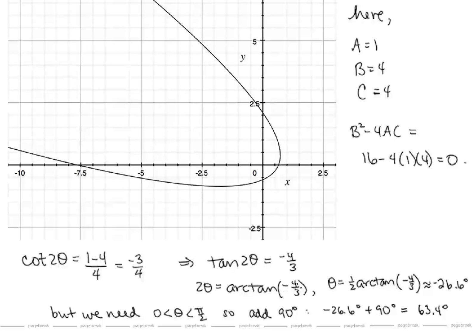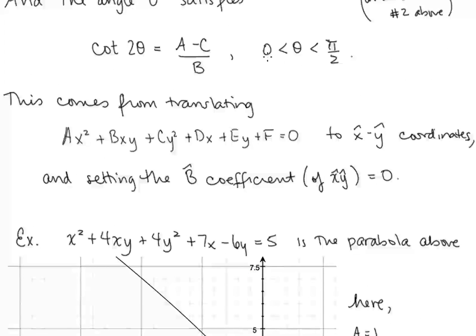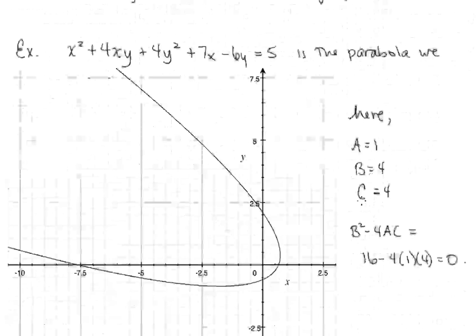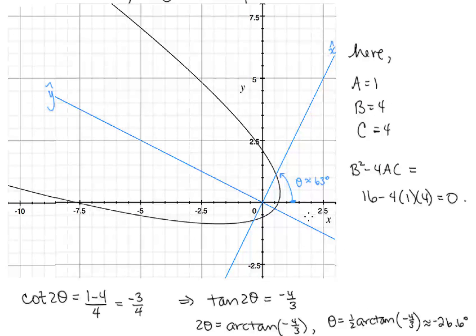So 2θ = arctan(−4/3), and θ = ½·arctan(−4/3). When we make this computation, we end up with approximately −26.6 degrees. But we're looking for theta between 0 and π/2 — we're not looking for a downward rotation. To keep things consistent, instead of a downward rotation of 26.6 degrees, we add 90 degrees to get an upward rotation of 63.4 degrees. So our angle of rotation is approximately 63 degrees.